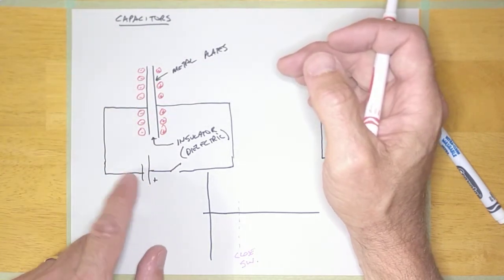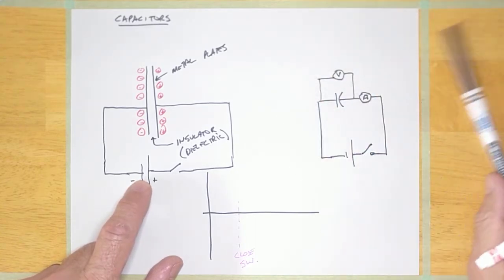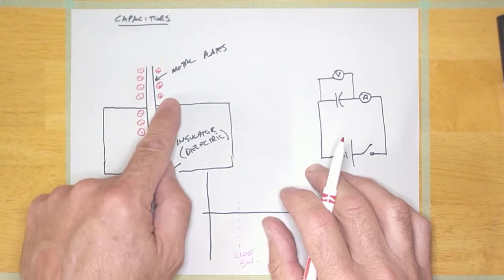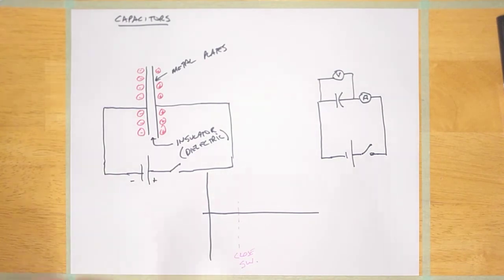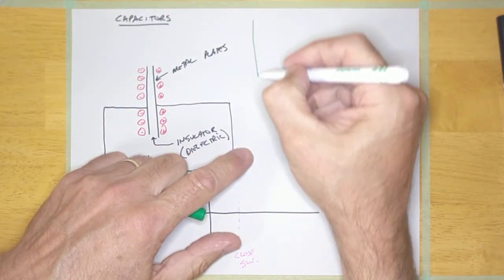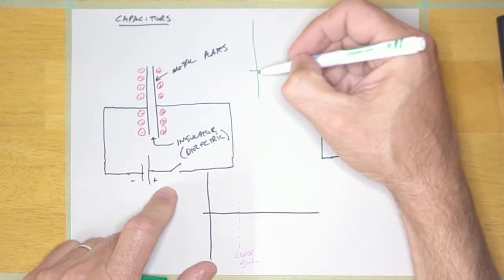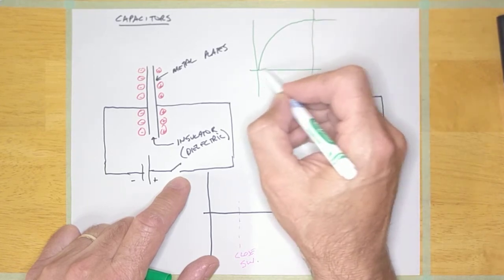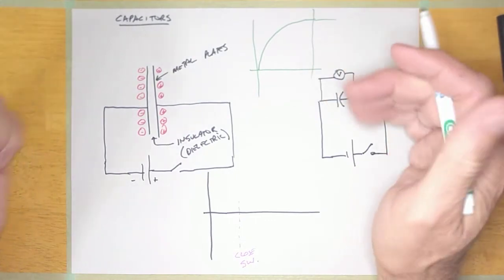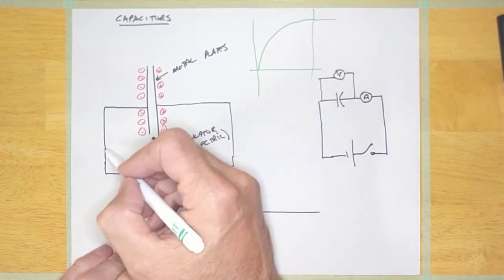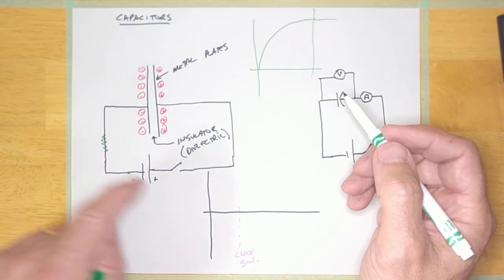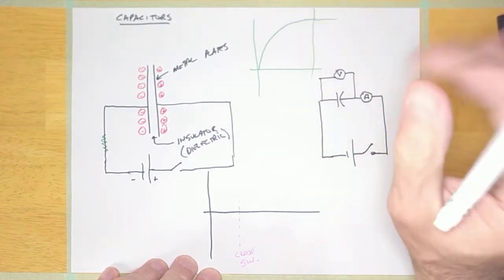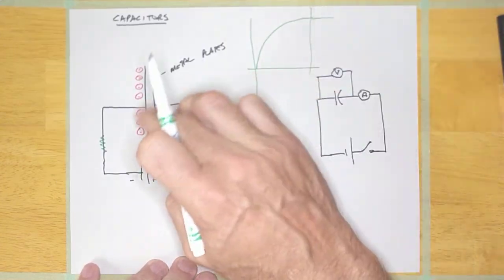When this capacitor is fully charged, it will have the same voltage as the battery. If I close this switch, I get a rush of current. Looking at that over time, that is the charge curve of a capacitor. I would see a voltage line where this would be fully charged, and this is the amount of time it takes to do that charging. The amount of time depends on how much resistance is in the circuit — the more resistance, the longer the current takes to flow and the longer it takes to charge the capacitor.